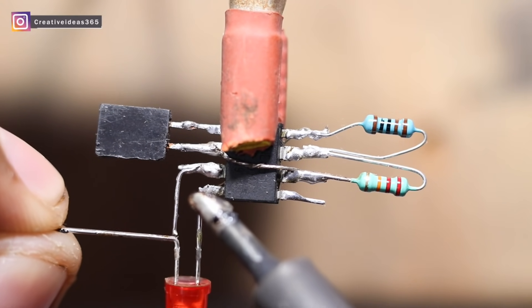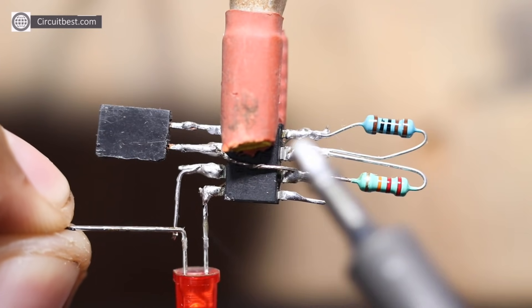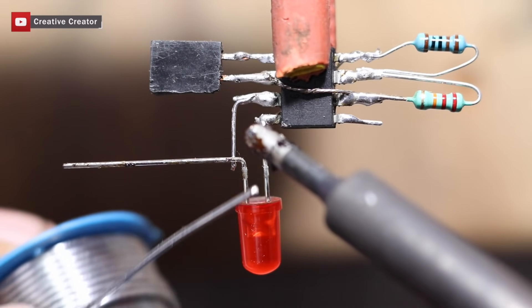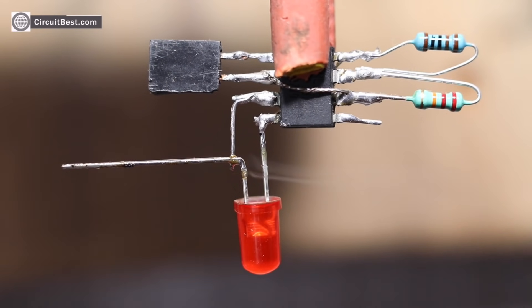Now connect the LED positive to the power rail and the LED negative to IC pin 3.